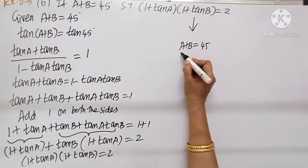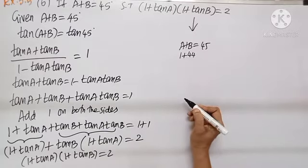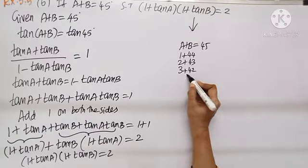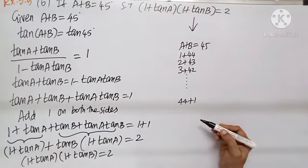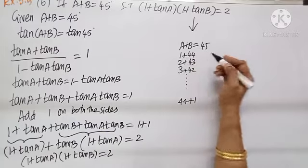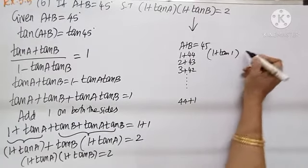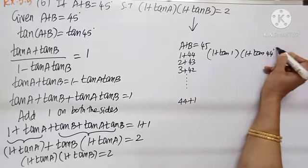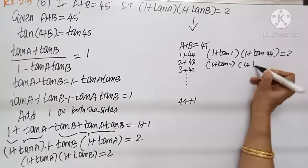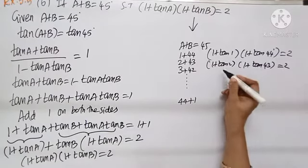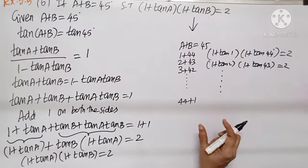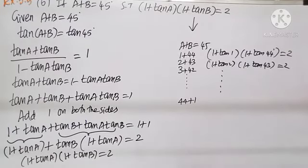Whenever A plus B is 45°, we can say 1 plus tan A into 1 plus tan B equals 2. What all could A and B be? A is 1 and B can be 44; A is 2 and B can be 43; A is 3 and B can be 42 — so many combinations. So applying this: 1 plus tan 1 into 1 plus tan 44 equals 2, and 1 plus tan 2 into 1 plus tan 43 equals 2. This is a major result that helps in solving the most challenging problem of this exercise.